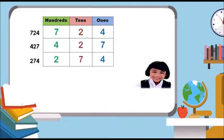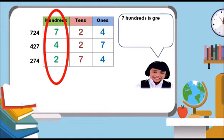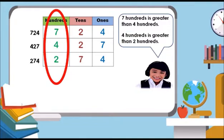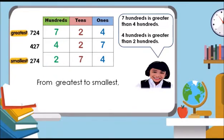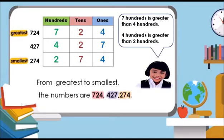Let us compare the hundreds. Seven hundreds is greater than four hundreds. Four hundreds is greater than two hundreds. So, 724 is the greatest. 274 is the smallest. From greatest to smallest, the numbers are 724, 427, 274.